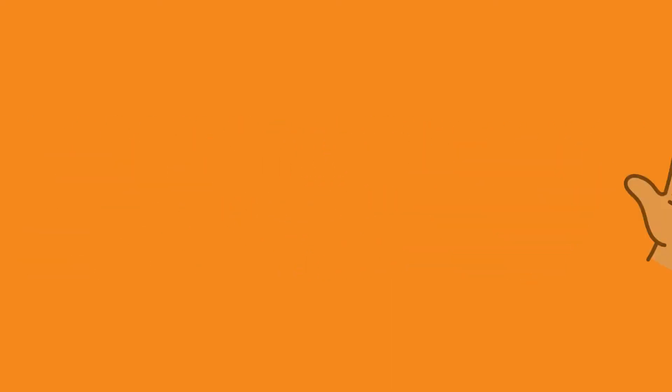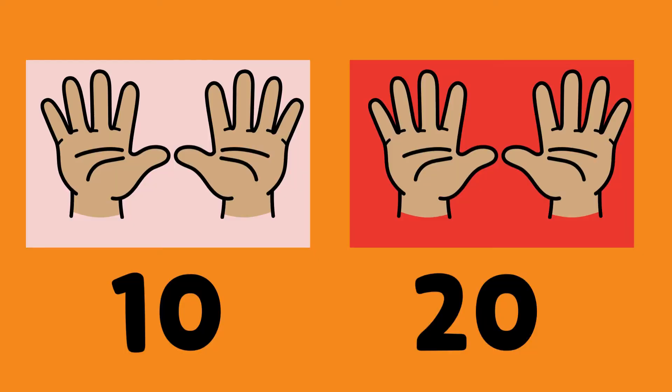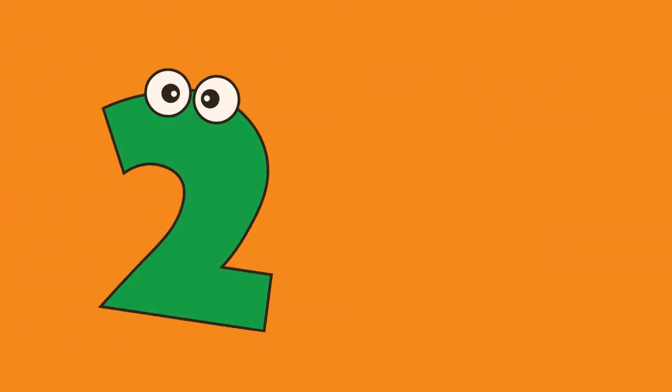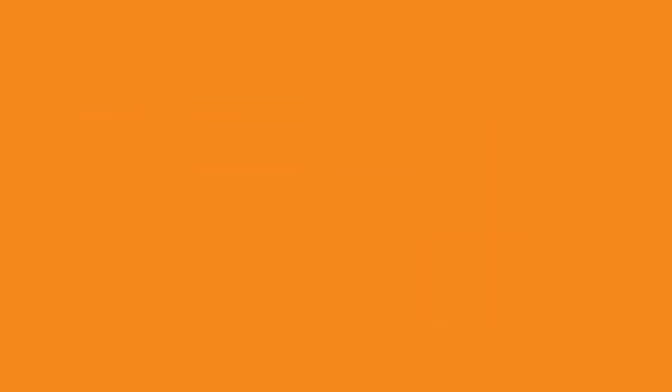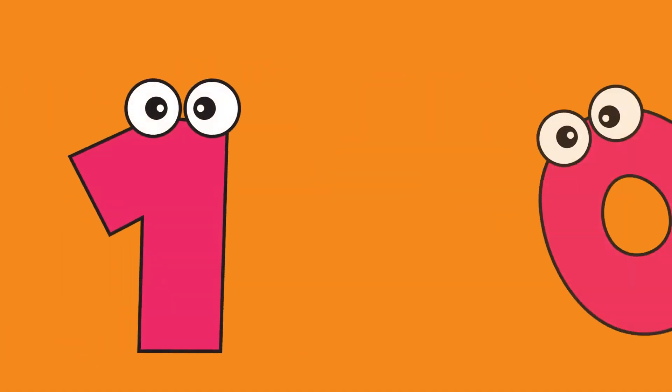Let's look at another example. How many fingers do you have on both hands? Ten, right! Let's count: one, two, three, four, five, six, seven, eight, nine, ten. You have ten fingers. Now imagine your friend also has ten fingers — how many fingers are those together? Twenty! And if another friend has ten fingers, how many are those? Thirty! So you're counting in tens: ten, twenty, thirty, forty, fifty, sixty, seventy, eighty, ninety, one hundred.